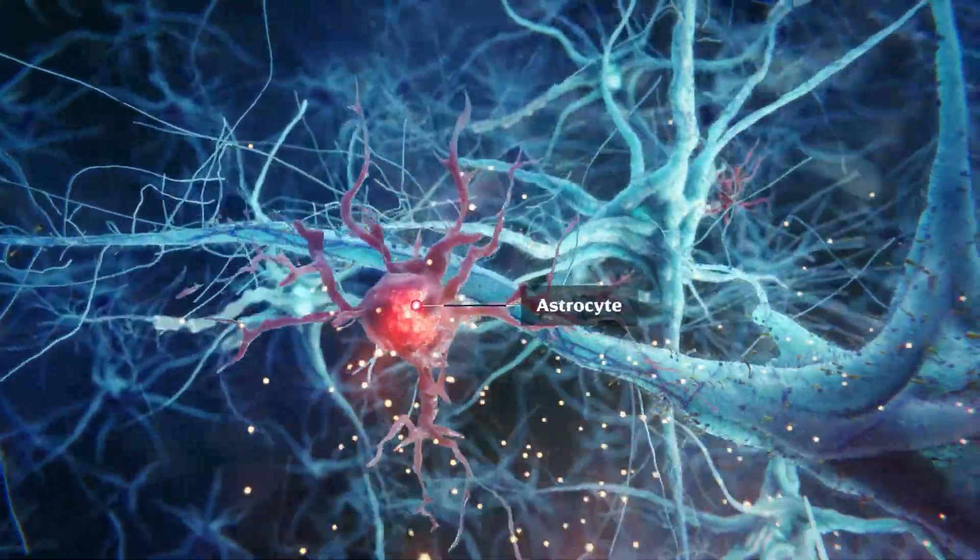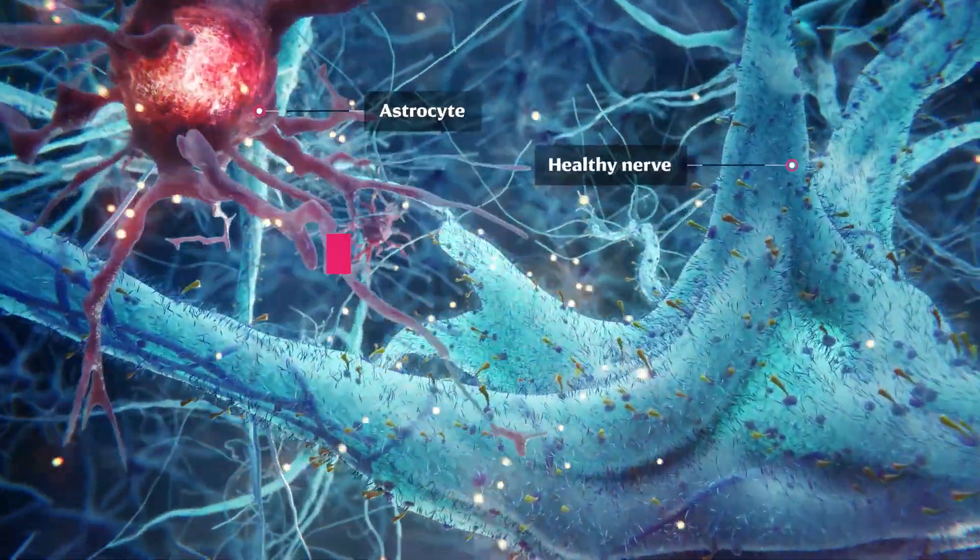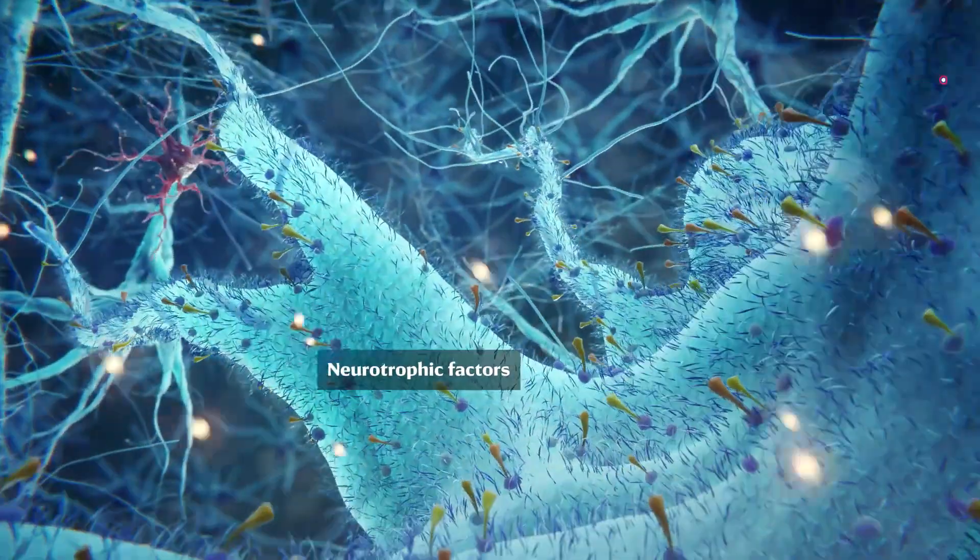Astrocytes, an important cell type within the brain, provide energy, nutrients and survival factors to nerve cells.